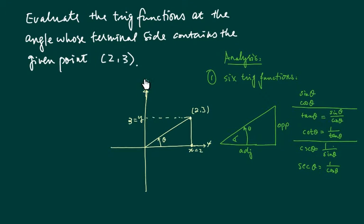Alright, the analysis goes something like this. So we're given a point (2, 3), x is equal to 2 and y equal to 3. We're going to draw the terminal side of this angle going counterclockwise. This is the theta.